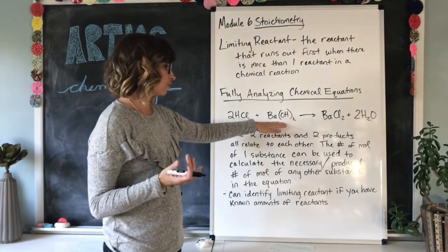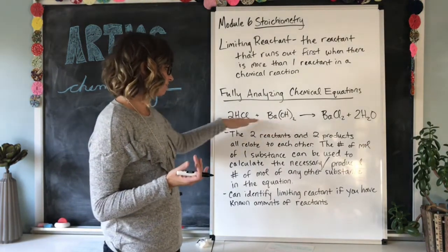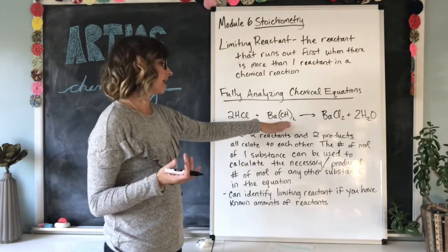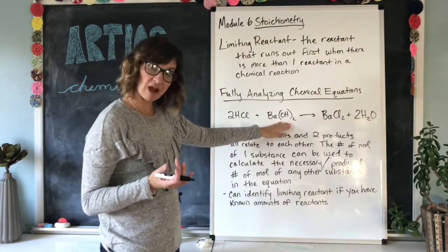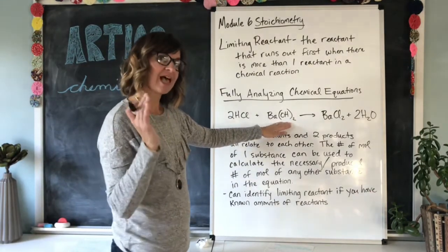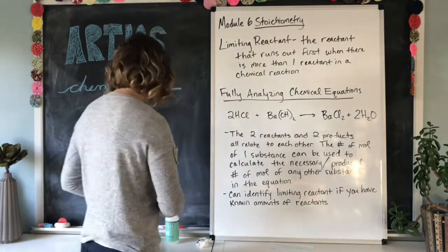So if you have less than one mole of barium hydroxide but you have two moles of HCl, then barium hydroxide is going to be your limiting reactant. Let's write that down and make it a little bit more clear.